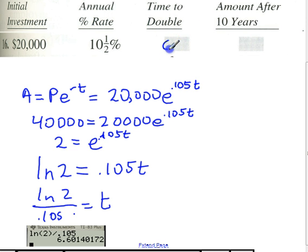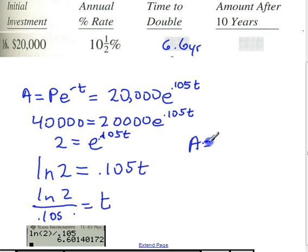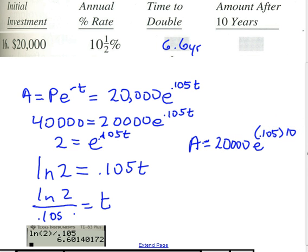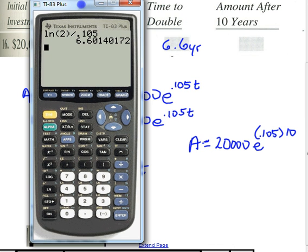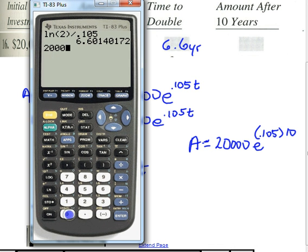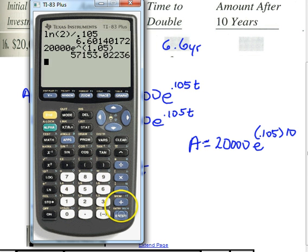Our answer is 6.6 years. Now what's the amount after 10 years? We just put 10 in for t: 20,000 times e to the 0.105 times 10, which is 20,000 times e raised to the 1.05, and we get $57,153.